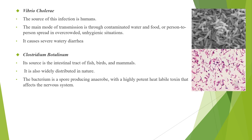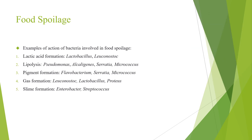Next is Clostridium botulinum. Its source is the intestinal tract of fish, birds, and mammals. It is also widely distributed in nature. The bacteria is a spore-producing anaerobe with a highly potent heat-labile toxin that affects the nervous system.